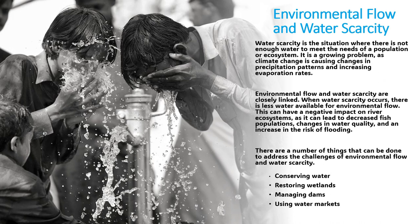There are a number of things that can be done to address the challenge of environmental flow and water scarcity. Conserving water can be done by using water-efficient appliances, fixing leaks, and planting drought-tolerant landscaping. Restoring wetlands helps to store water and release it slowly, maintaining natural flow regimes. Managing dams can modify the flow of water downstream to ensure rivers have enough water to maintain their ecological functions. Water markets allow water users to buy or sell water rights, which can help ensure water is used efficiently and that environmental flow is protected.